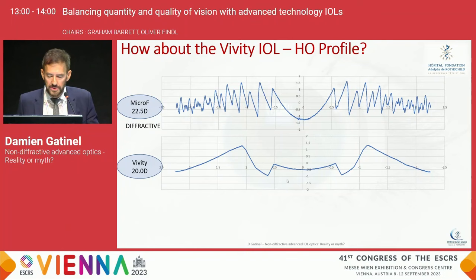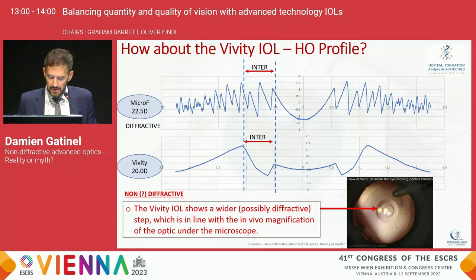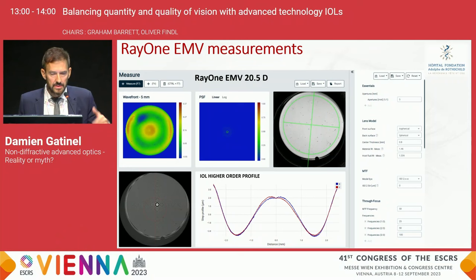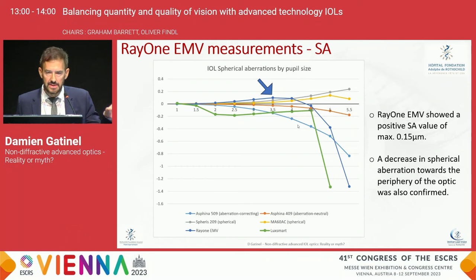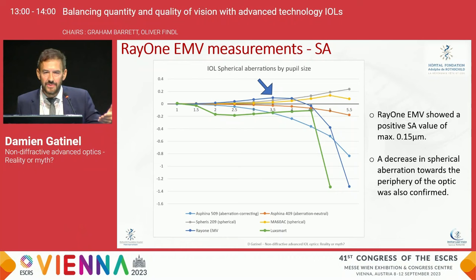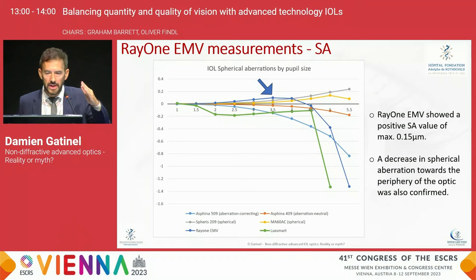I just try to stick to optical reality — the Vivity shows possibly a diffractive element. What about the Rayner? The Rayner has been measured and provides positive spherical aberration. When measuring several lenses — the EMV in blue and others using negative spherical aberration — the lens provides a constant spherical aberration throughout most of the optic, and it's positive. It doesn't go up much toward the edge; on the contrary, it goes down to preserve optical quality for large pupil diameters.